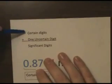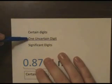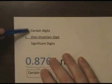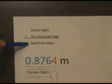So this combination of the certain digits that come from the measuring device and the one tacked on to the end that is estimated between the marks, those together are called the significant digits in a measurement.